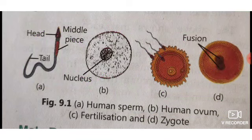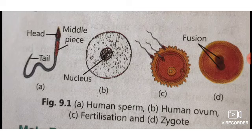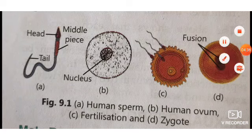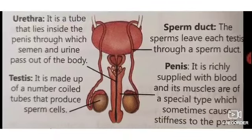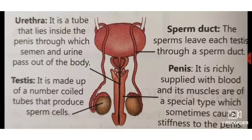When this zygote grows and develops to form a new individual, that process is known as sexual reproduction. Now moving further, our next topic is the male reproductive system, followed by the female reproductive system.